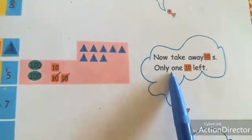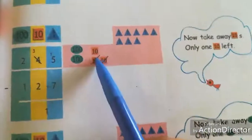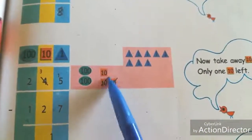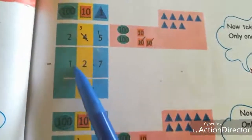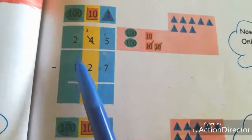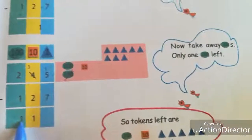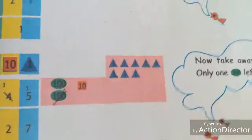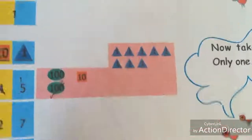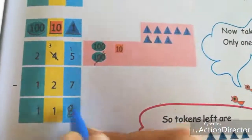Next, take away tens. We already have 3 tens. 3 minus 2 — cancel 2 tens — 1 ten remaining. Hundreds: 2 hundreds minus 1 hundred, remaining 1 hundred. So the answer is 118. 1 hundred, 1 ten, 8 ones — the answer is 118.